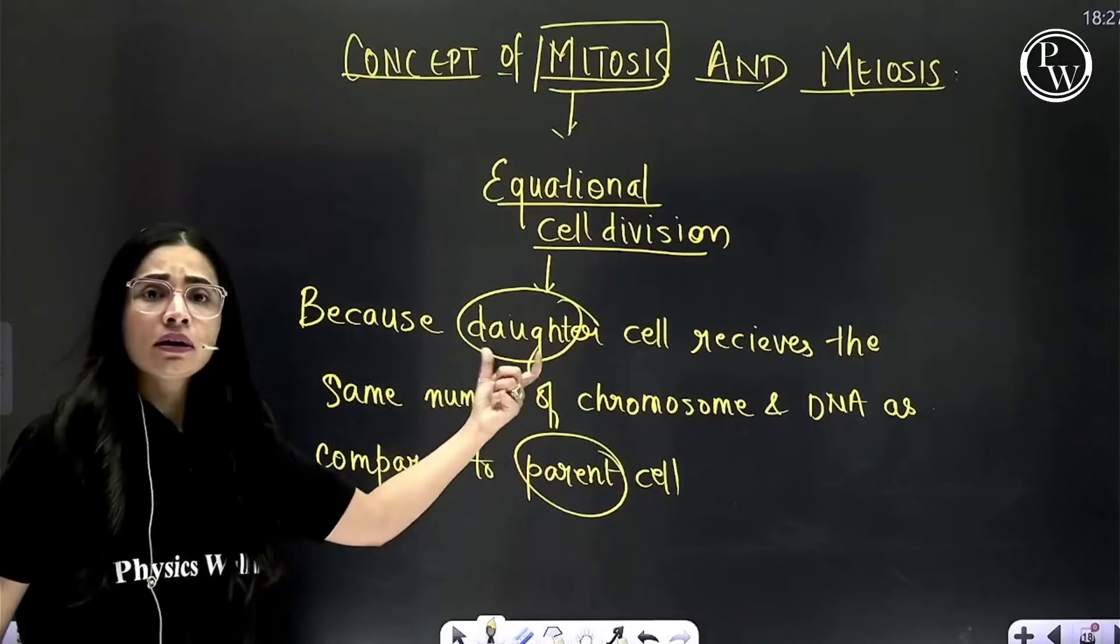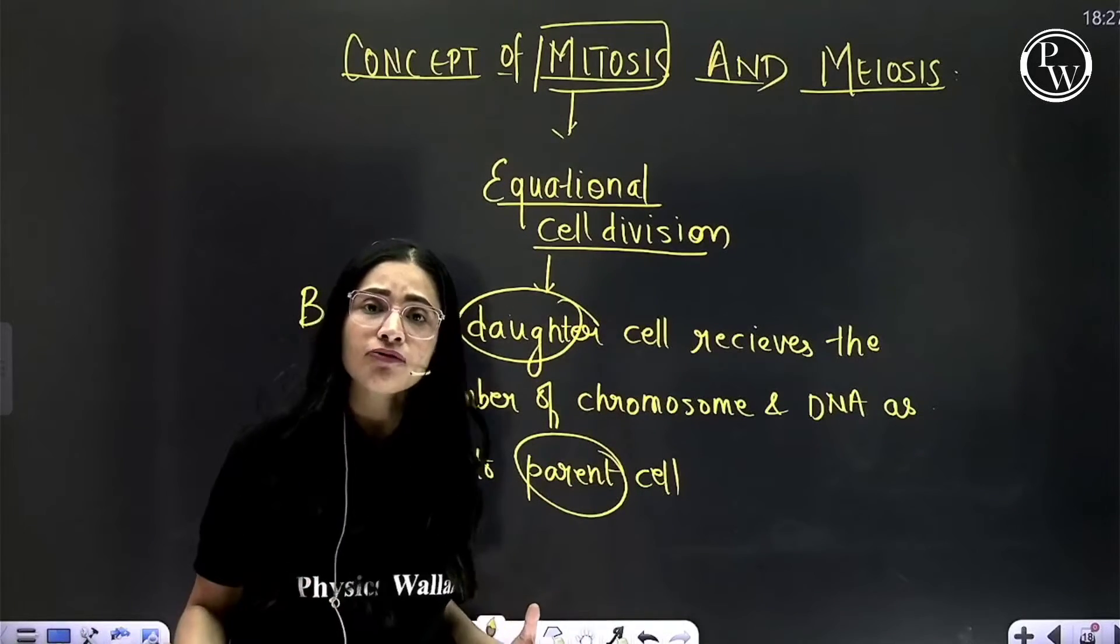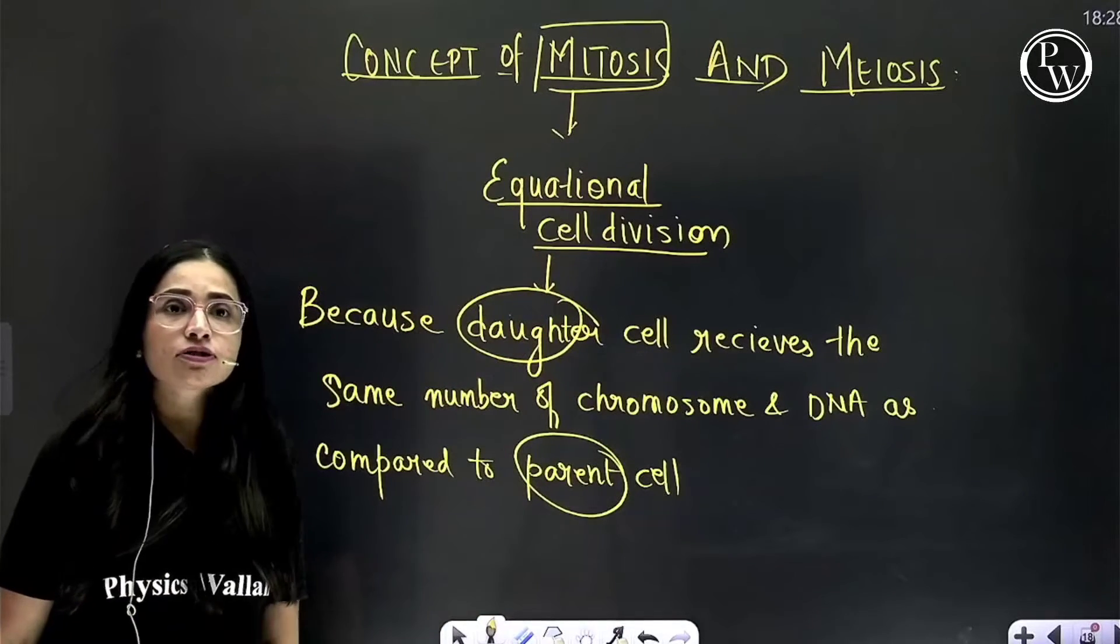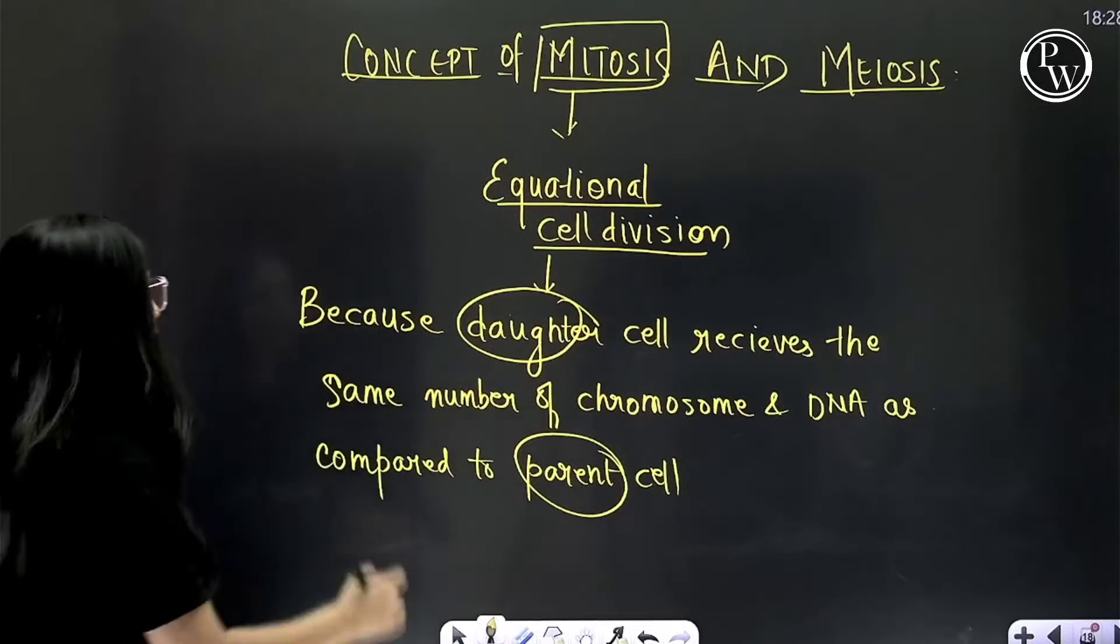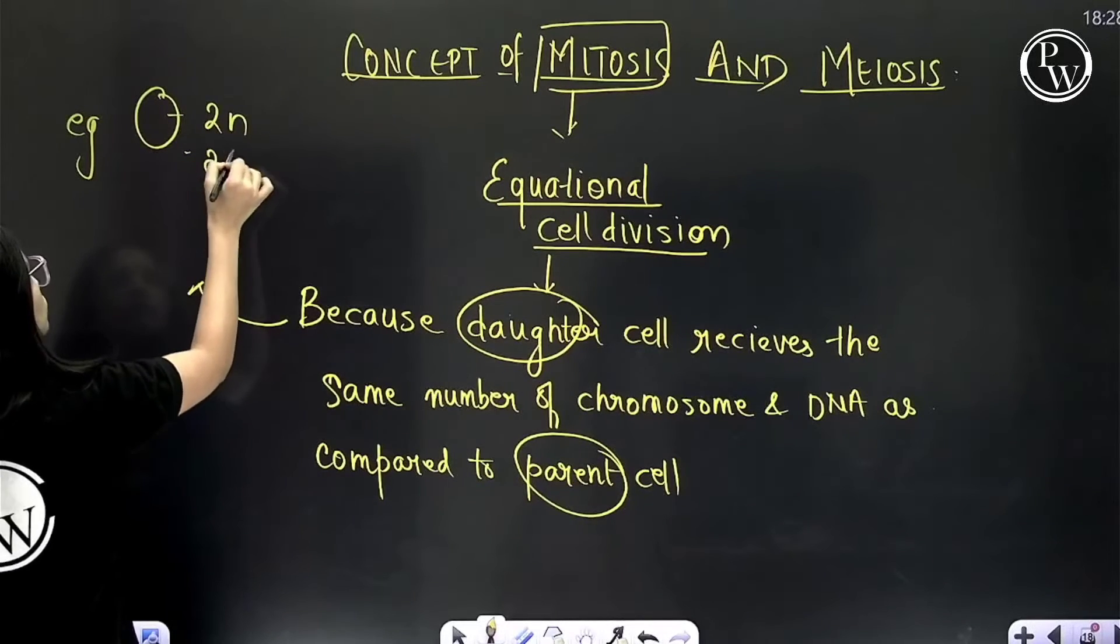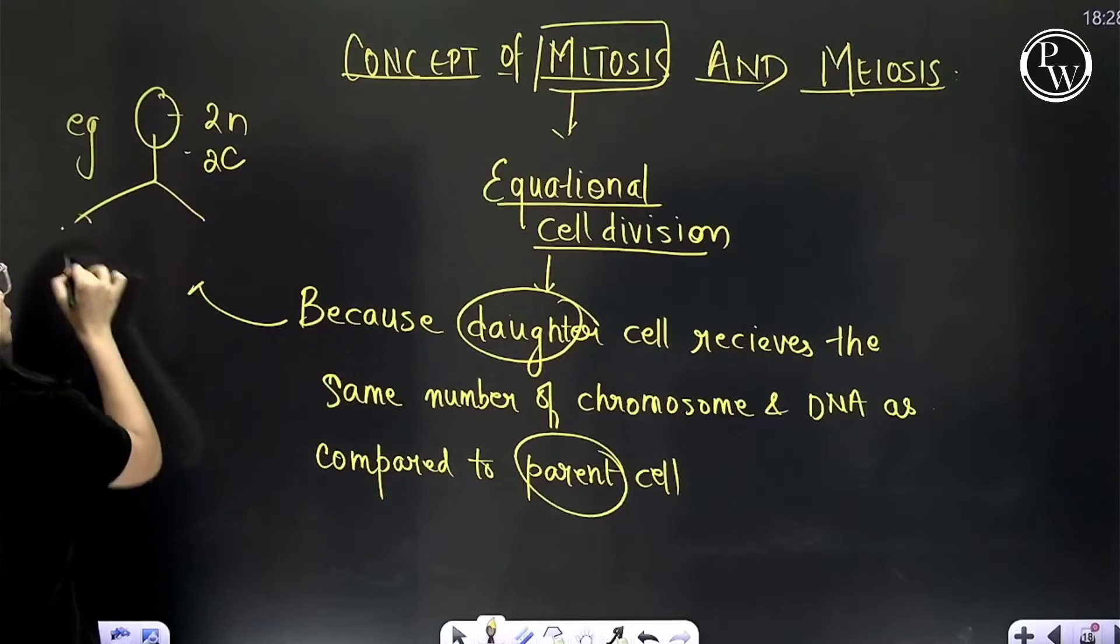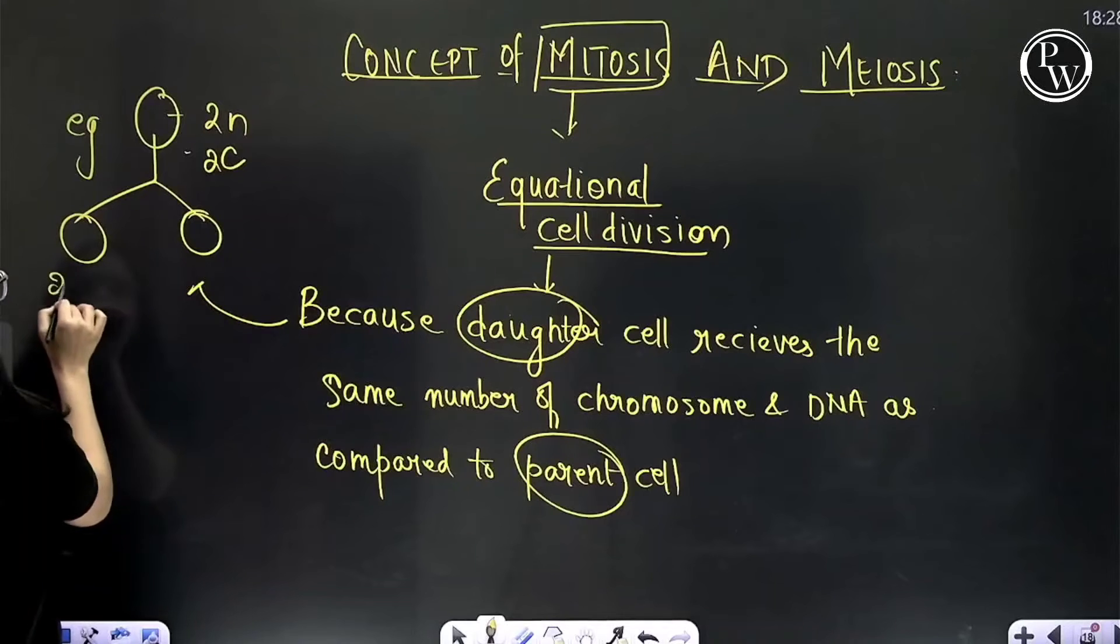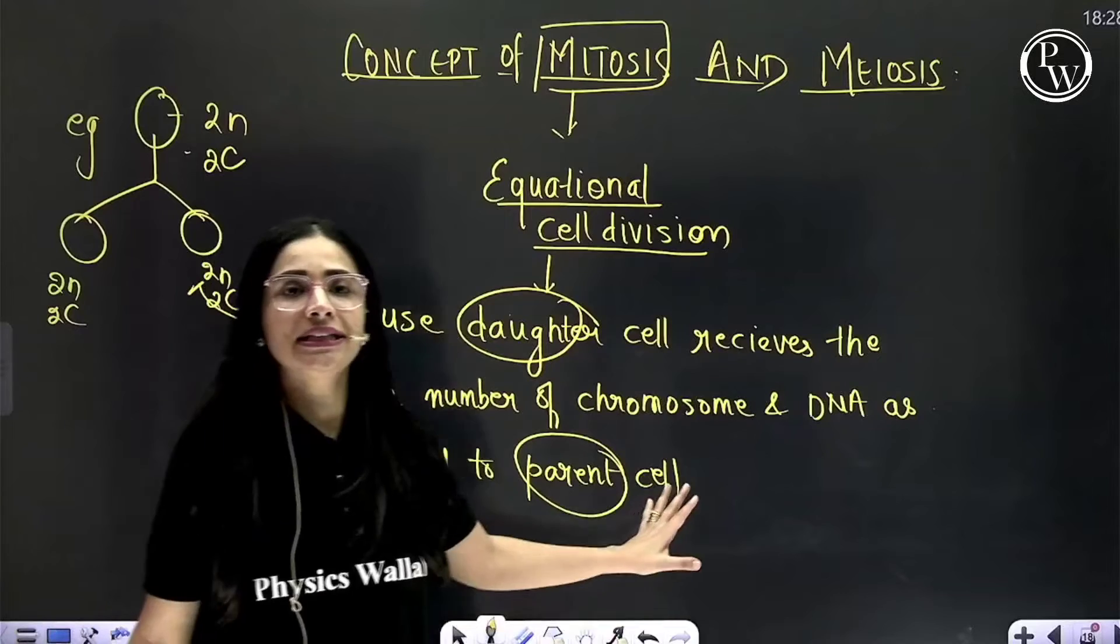Hence from one cell, two daughter cells are obtained and both the daughter cells are same as that of parent, equal as that of parent. Therefore mitosis is also known as equational cell division. For example, if my parent cell is diploid having 2C amount of DNA, then from this, two daughter cells will be produced by mitosis having same number of chromosomes and same amount of DNA.